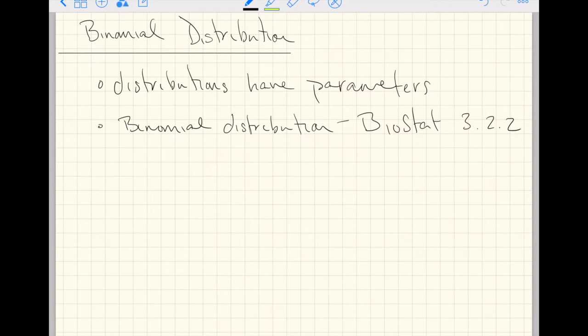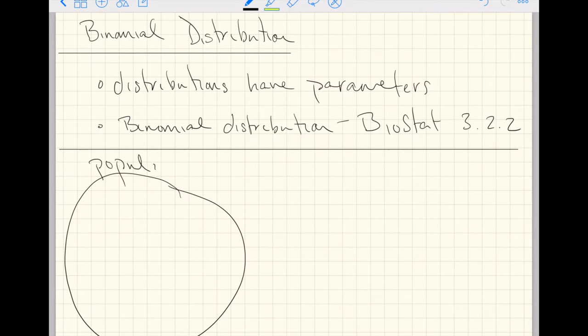Our first point for this video: distributions have parameters. We're getting to the idea that the world of statistics is trying to make statements about the population, and we are formalizing with random variables the idea that distributions are what describe the population of interest. In the world of statistics, we actually theorize that there is a mathematical formula describing this curve, and this curve is the distribution itself that describes the population.